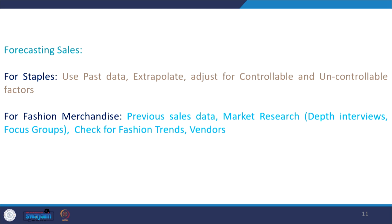For qualitative research, you can use depth interviews — unstructured personal interviews where the interviewer probes customers to get their responses. This can be used to measure whether customers will continue buying the same product, whether they want to shift, or whether they are satisfied or dissatisfied — which can also serve as a proxy for future purchase intent.